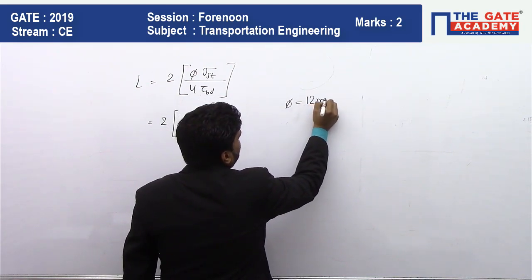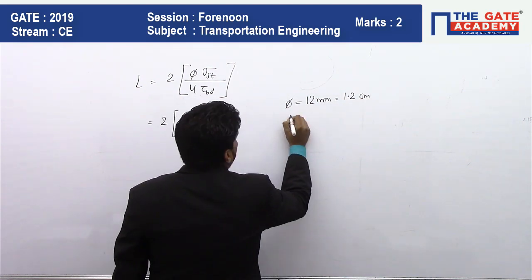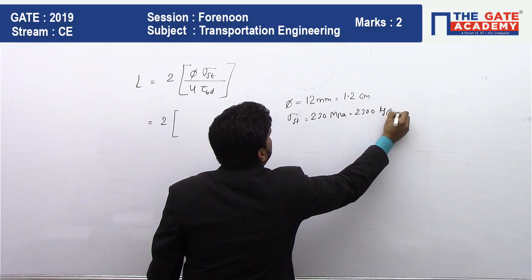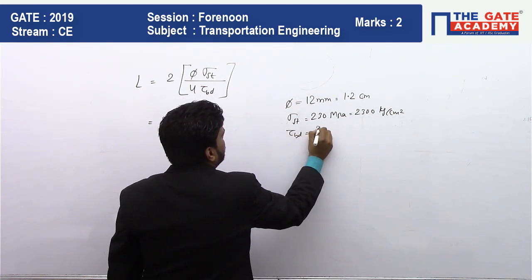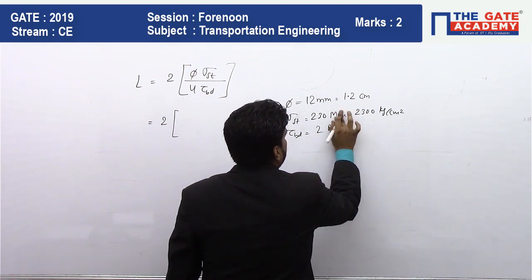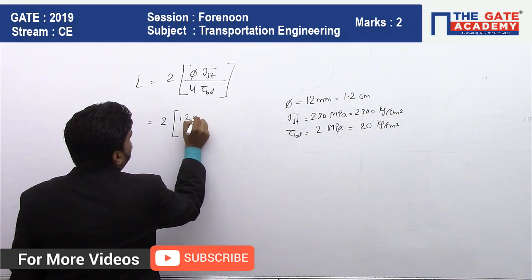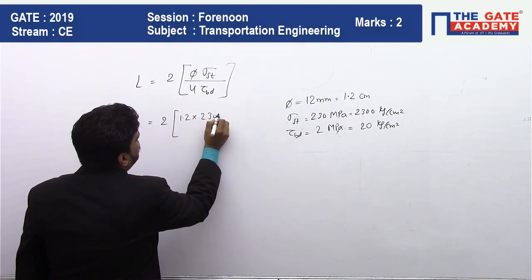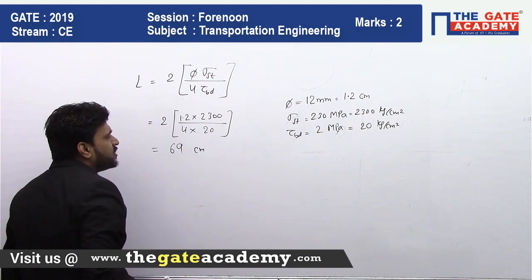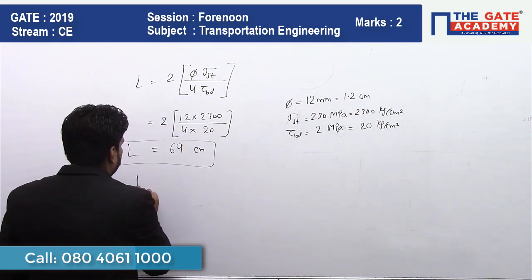Phi is the diameter of the tie bar, which is 12 mm or 1.2 cm. Sigma ST is given as 230 MPa, which we convert to 2300 kg/cm². The bond stress (top it) is 20 kg/cm². Substituting: (1.2 × 2300) / (4 × 20) × 2 = 69 cm. So the length of the tie bar is 69 cm, or 690 mm.